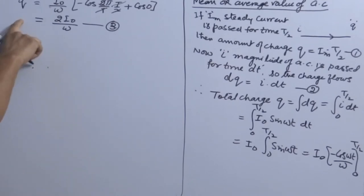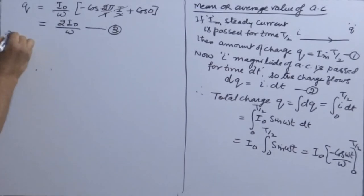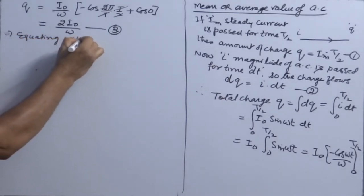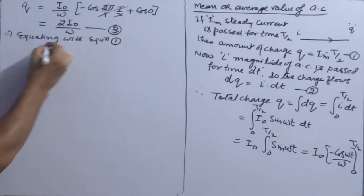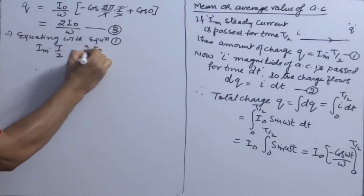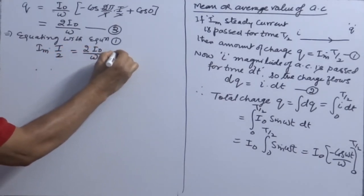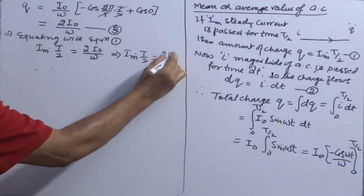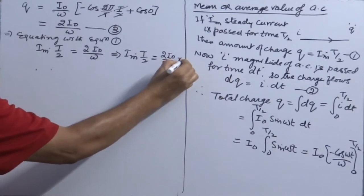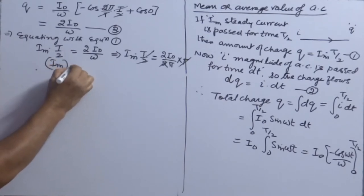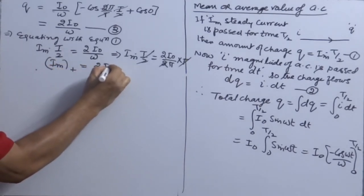Now this charge and that charge in the equation must be equated. So Im × T/2 = 2I₀/ω. Since ω = 2π/T, T and 2 cancel, giving Im(positive) = 2I₀/π.